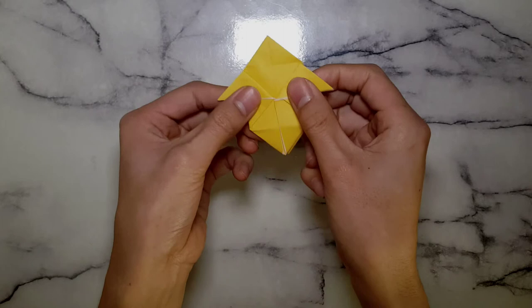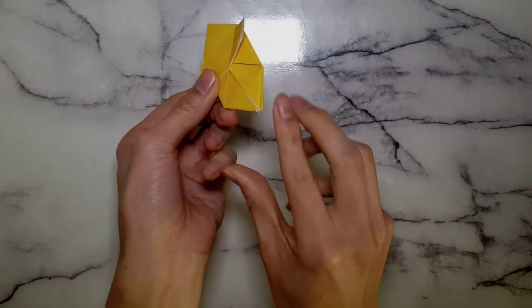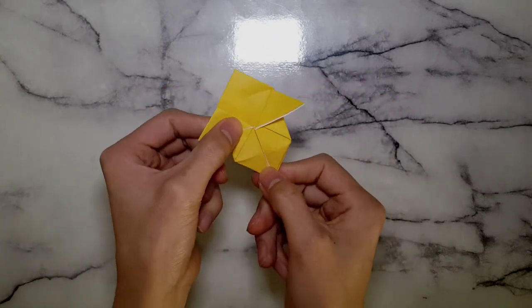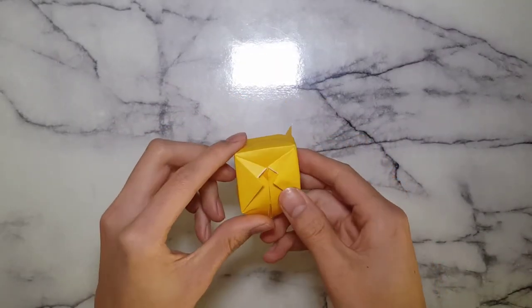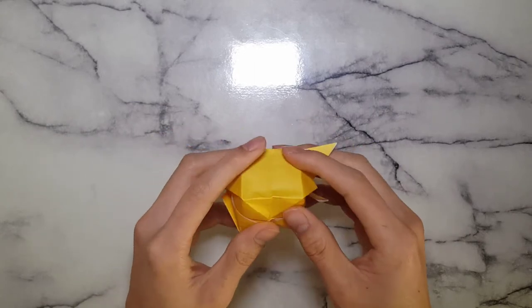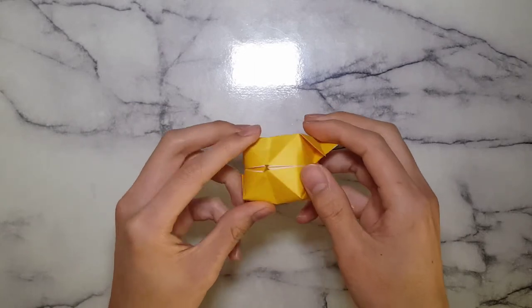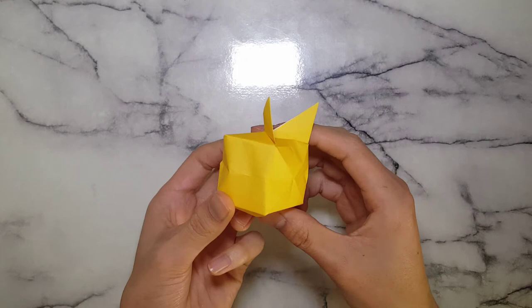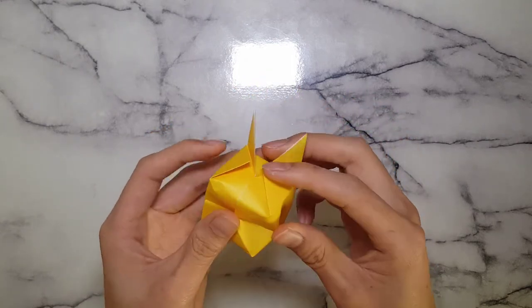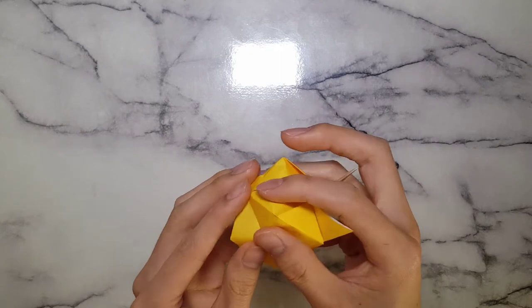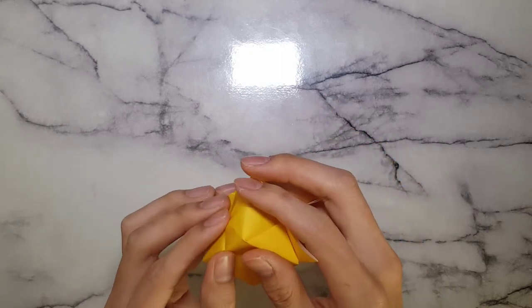Go and turn it over. And now we're going to just blow air into the bottom part. Once you've done that, it should inflate into a cube. And this is what it should look like. So that's where we blew the air in. That's the front face. You've just made an origami cube.